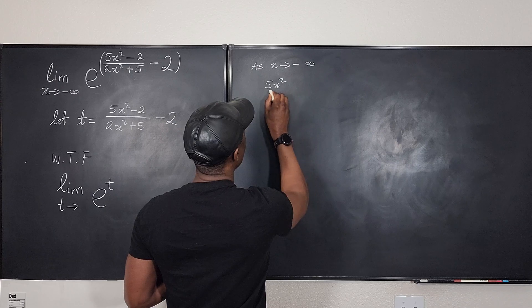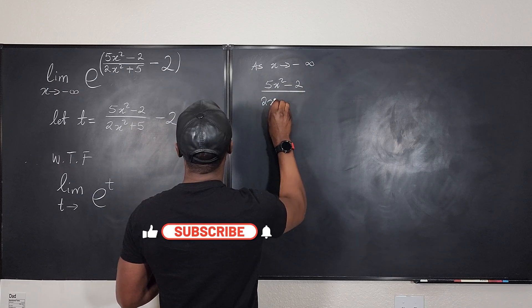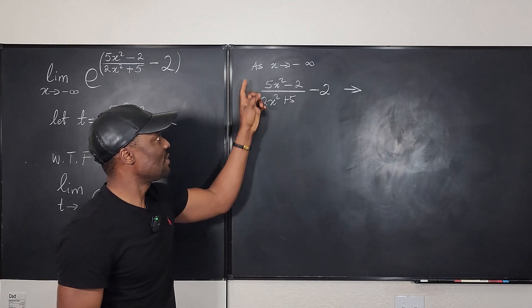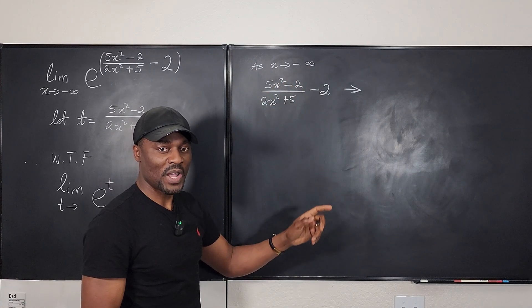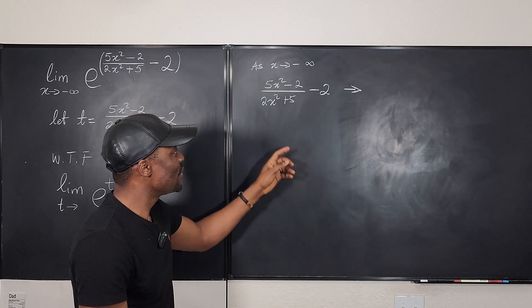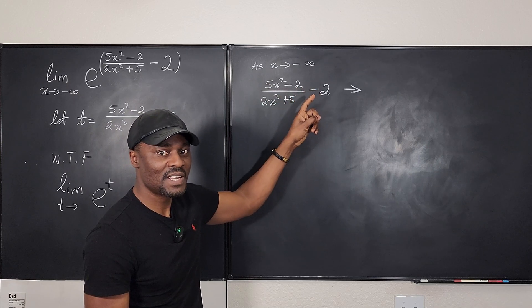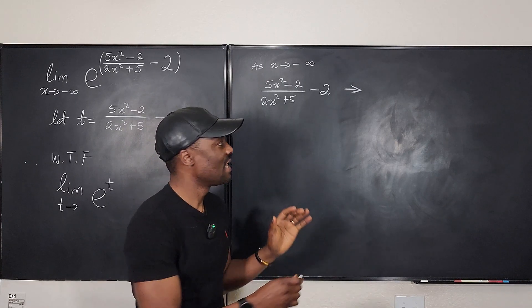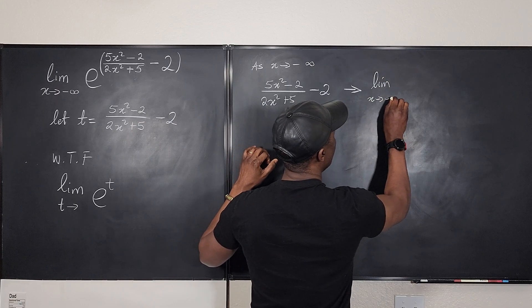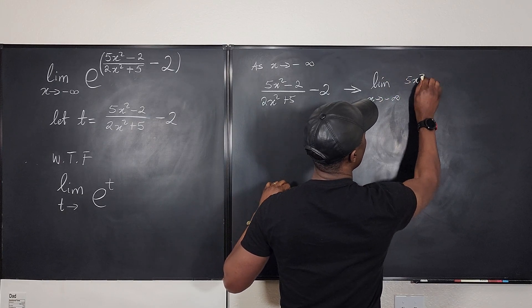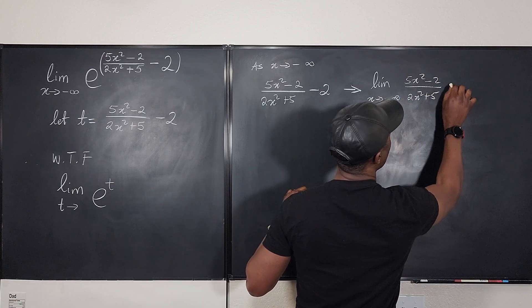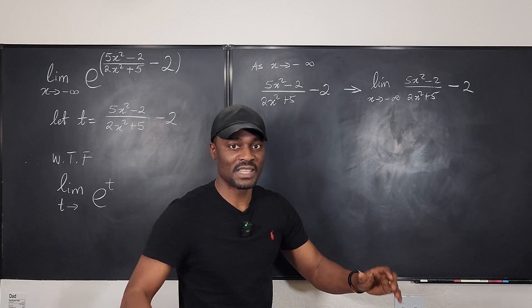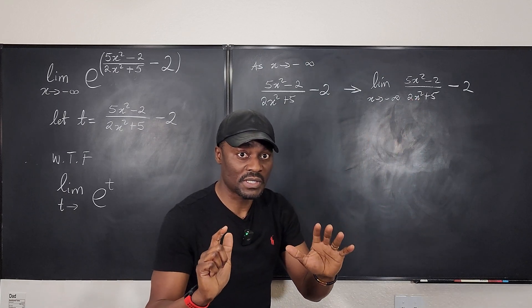As x goes to negative infinity, what's happening to (5x² minus 2) over (2x² plus 5) minus 2? It's like you're taking a limit. In essence, we're taking the limit as x goes to negative infinity of 5x² minus 2 over 2x² plus 5, minus 2. For a rational expression going to infinity or negative infinity, the fast technique is to divide every term — focus on the denominator.